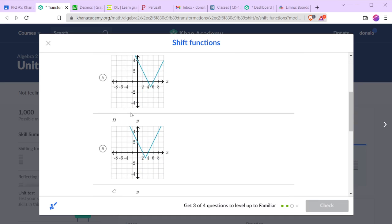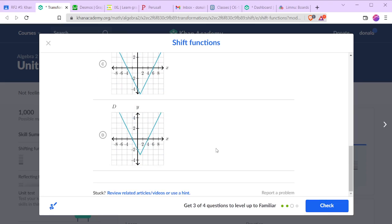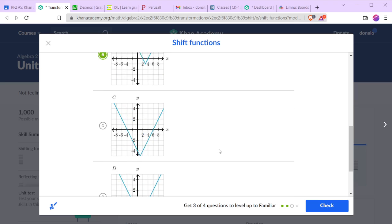So we want a graph with a vertex at negative three, negative one with the same slopes. So b is the only contender in terms of having the right vertex. I scroll down because if others had the correct vertex, we would have to check the slopes as well.